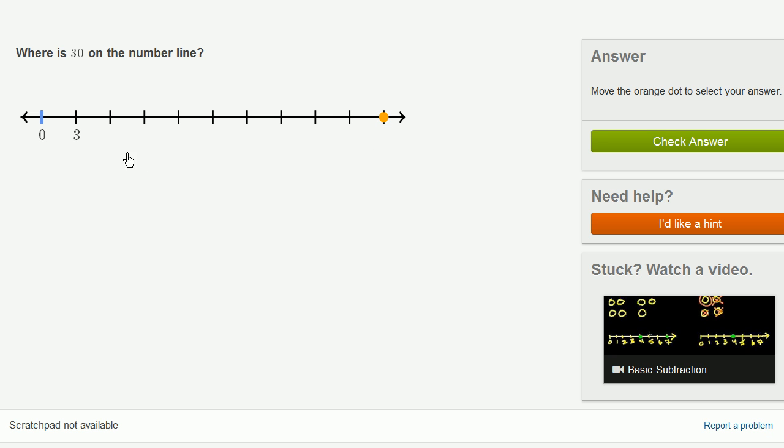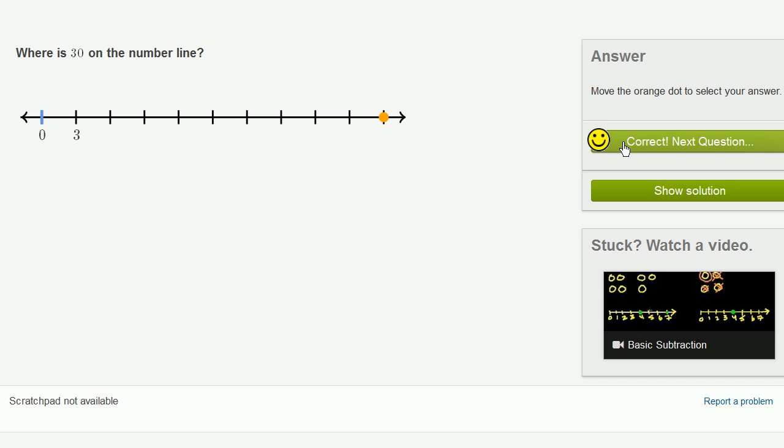Another way you could have thought about it is if each of these marks are 3, to get to 30 we have to go to 10 of these marks. So you go 1, 2, 3, 4, 5, 6, 7, 8, 9, 10. Let's do a few more.